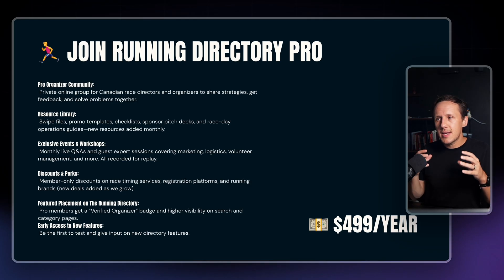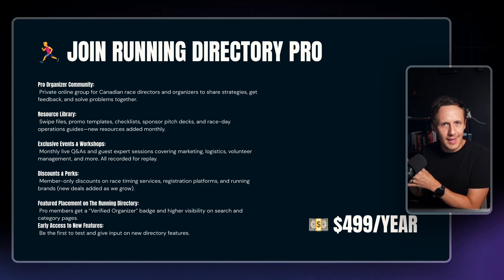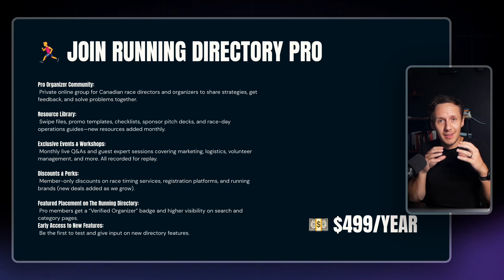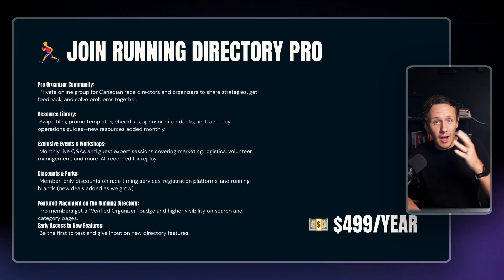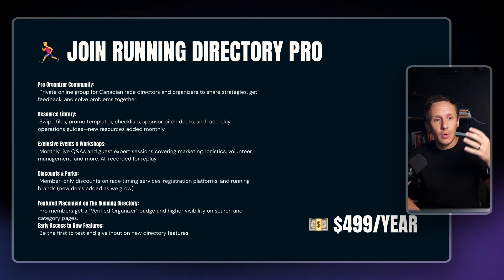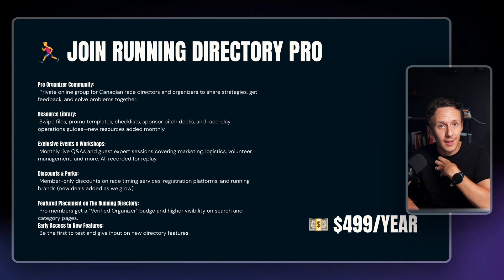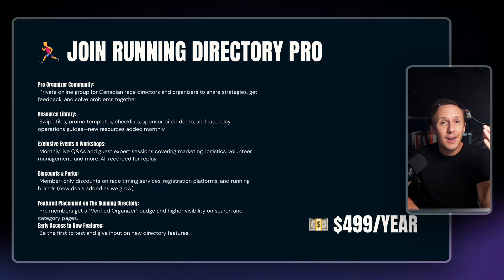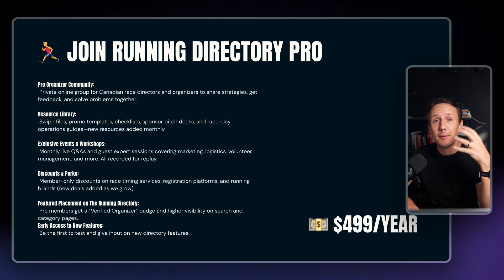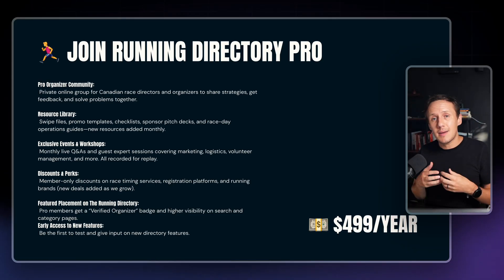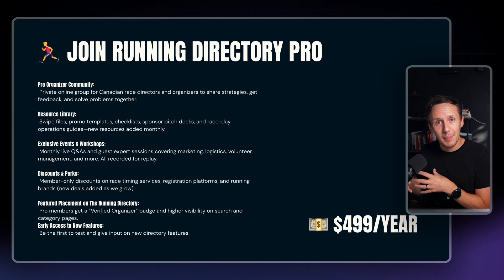The key behind all of this is to focus on the key pain points that your community has and to keep the value super simple. The way I phrased it for the running directory is to create a private online group for Canadian race directors. The more specific you are here, the better — the more specific, the more relevant they'll feel it is to them, and the more likely they will be to pull the trigger. The second thing is to add a resource library: add things like templates they can use, checklists, even pitch decks that they might want to reuse. If you can figure out the big pain points you can solve by adding them as resources, you've already added another reason why they should join.